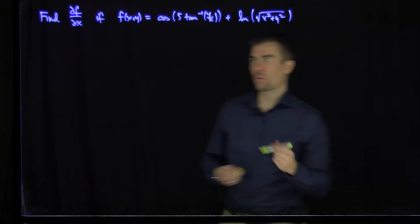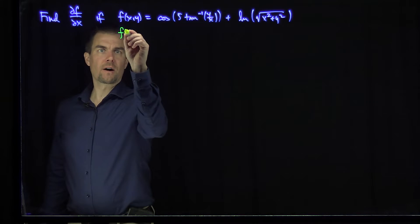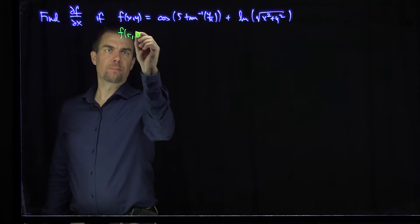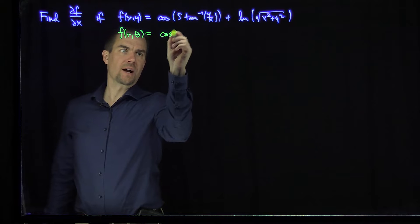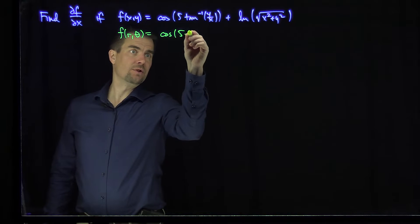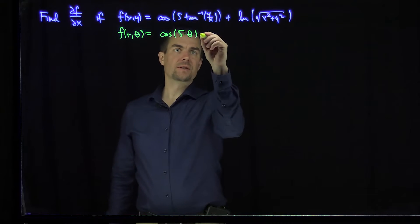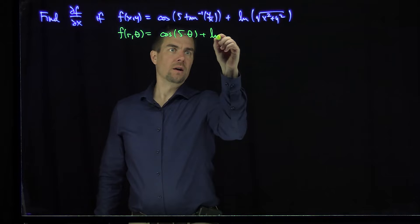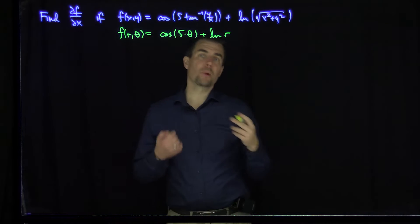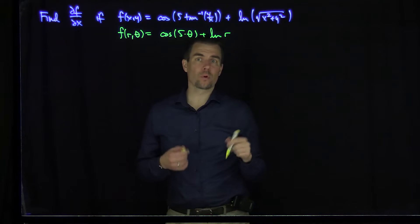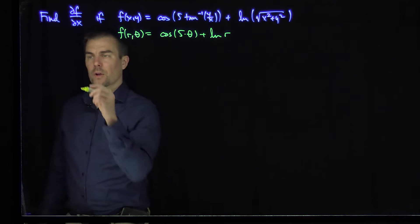If we put this function into polar coordinates, we see that f of r and theta is going to be the cosine of 5 theta — since the tangent inverse becomes theta — plus the natural log of r. So the function is much simpler in polar coordinates, so let's change our problem into a polar problem.